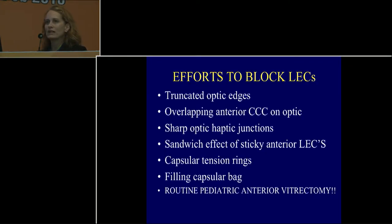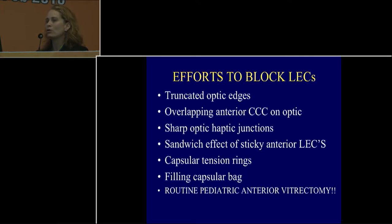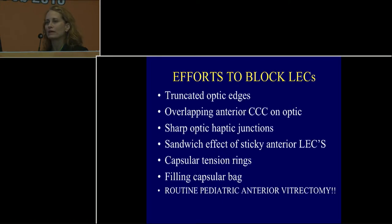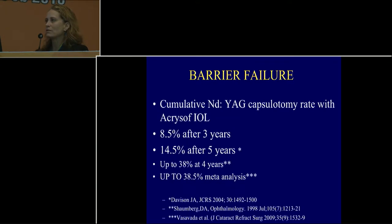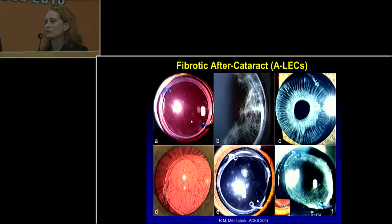We have done many different things over time to prevent lens epithelial proliferation: truncated optic edges overlapping the anterior capsulorhexis on the optic, sharp optic-haptic junctions, a sandwich effect of sticky anterior lens epithelial cells, capsular tension rings, filling the capsular bag, and even anterior vitrectomy in routine cases. But this often fails — up to 38.5% in a meta-analysis — which may be unacceptable and unnecessary, as you will come to see.